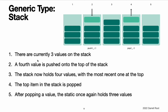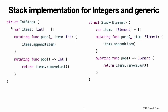One, there are currently three values on the stack. Two, a fourth value is pushed onto the top of the stack. Three, the stack now holds four values, with the most recent one at the top. Four, the top stack item is popped. Five, after popping a value, the stack once again holds three values.